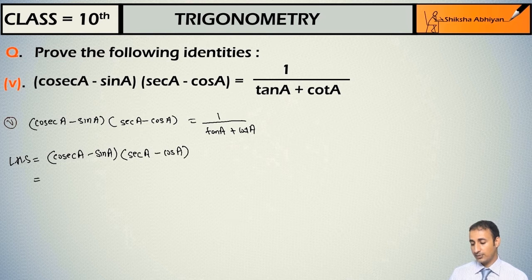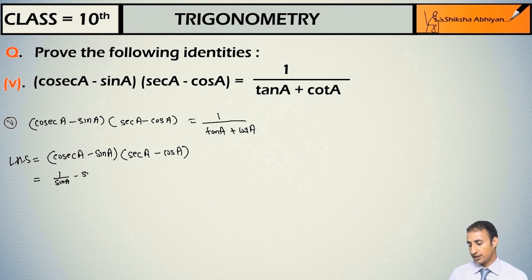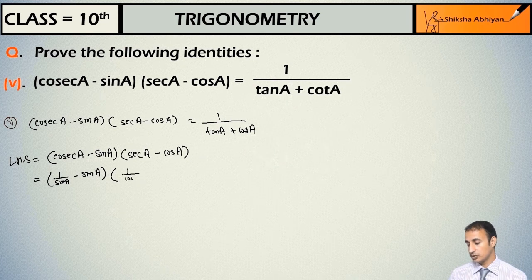Students, here we will convert everything into sin and cos. I can write cosec(a) as 1 upon sin(a) minus sin(a), bracket close. In the second bracket, I can write sec(a) as 1 upon cos(a), minus cos(a).